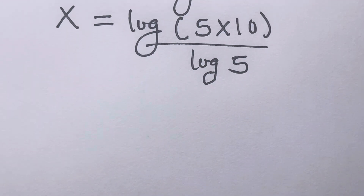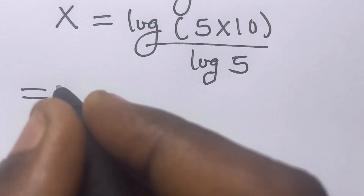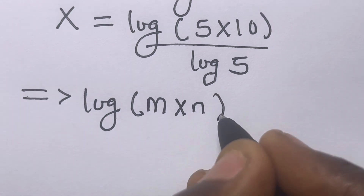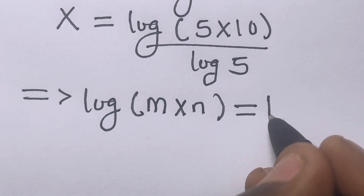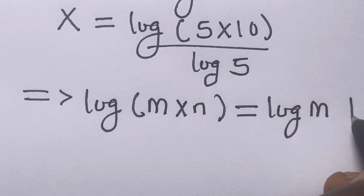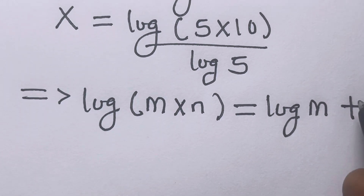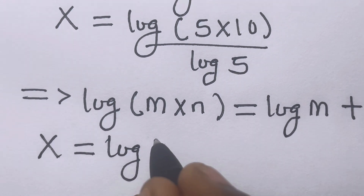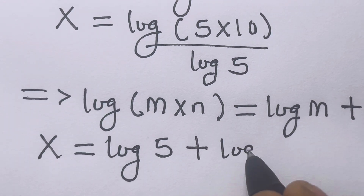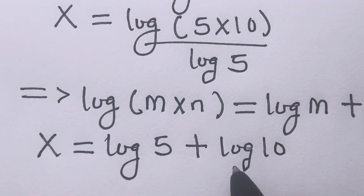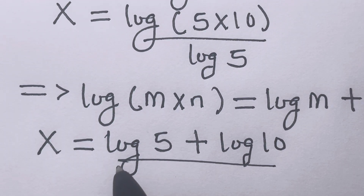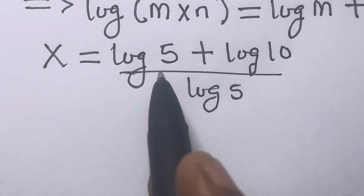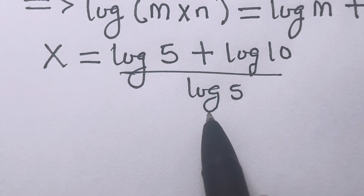We have to recall from the laws of logarithms that if you have log of m times n, this equals log m plus log n. Applying this to the above, we will distribute and divide each of log 5 and log 10 by log 5.